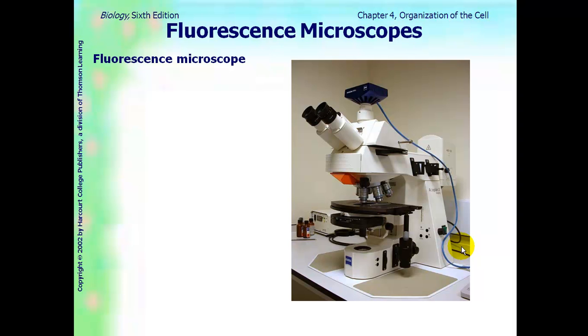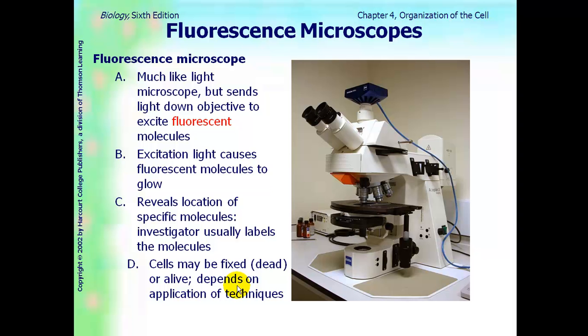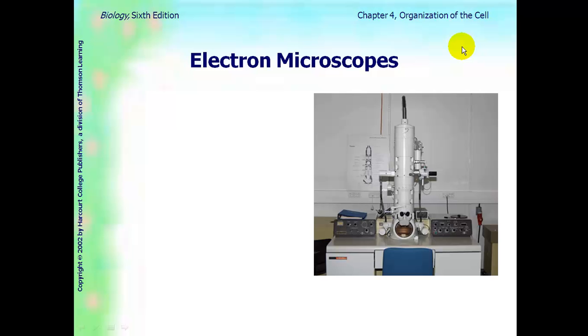There are also microscopes called fluorescent microscopes, as seen here. It's much like the light microscope, as you can see. It kind of looks a little bit similar. But it sends the light down on the objective to excite fluorescent molecules. This excitation allows the fluorescent molecules to actually glow. And then they can, if they see them, then they can label the molecules. Cells can be dead or alive, depending on the application and what you're using it for.